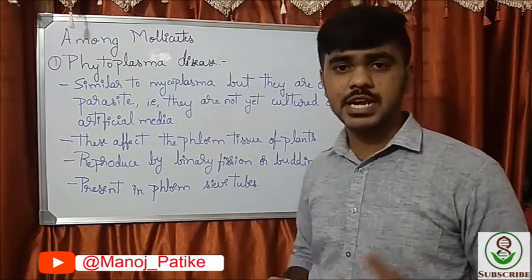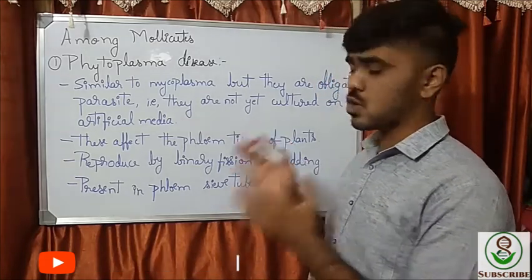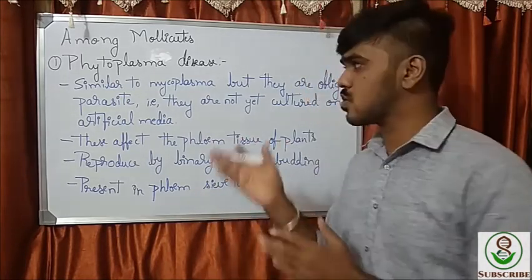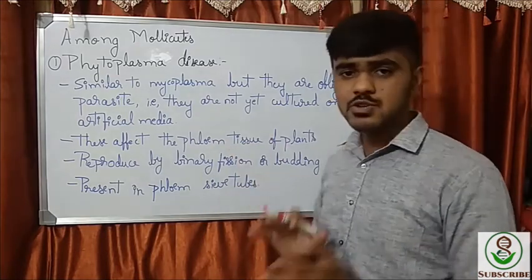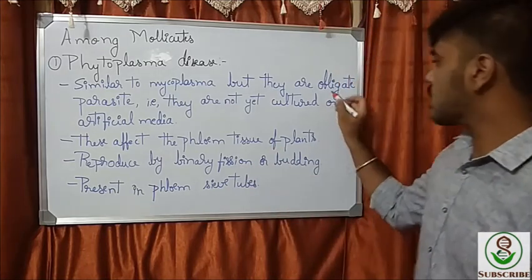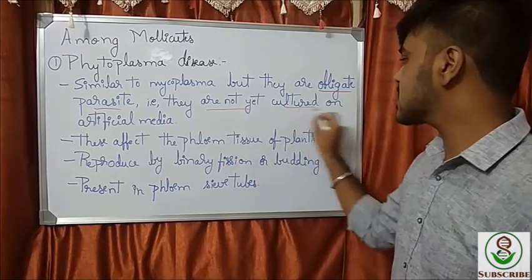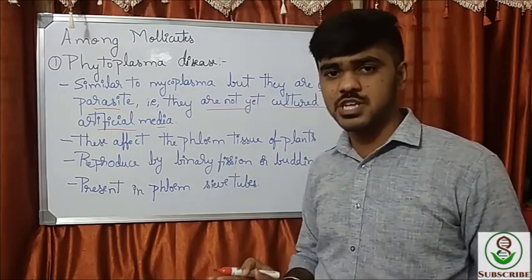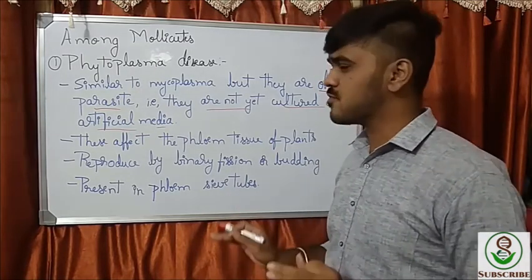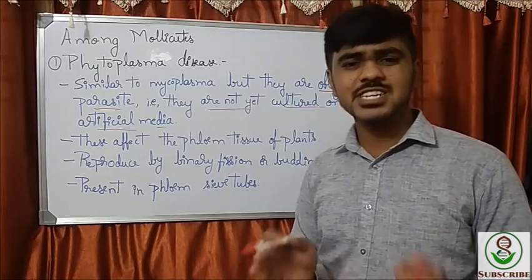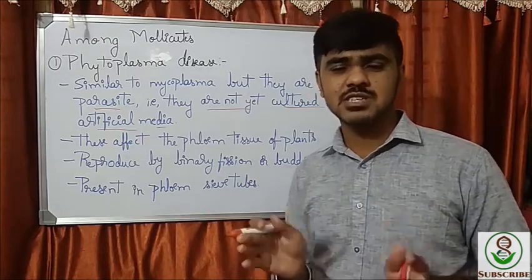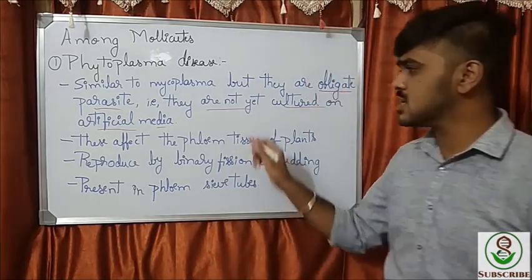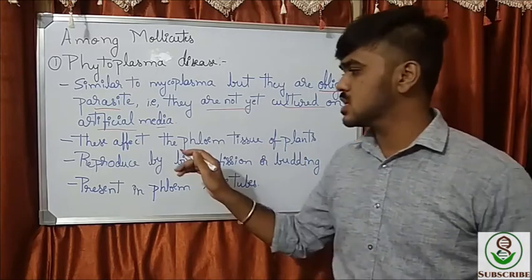Among Mollicutes there are two types: phytoplasma and spiroplasma. Phytoplasmas are the organisms that cause these plant diseases. They are similar to mycoplasma but are obligate parasites — they cannot be cultured on artificial media. Till now, attempts to culture phytoplasma on artificial media have not been successful, so we name them as obligate parasites.